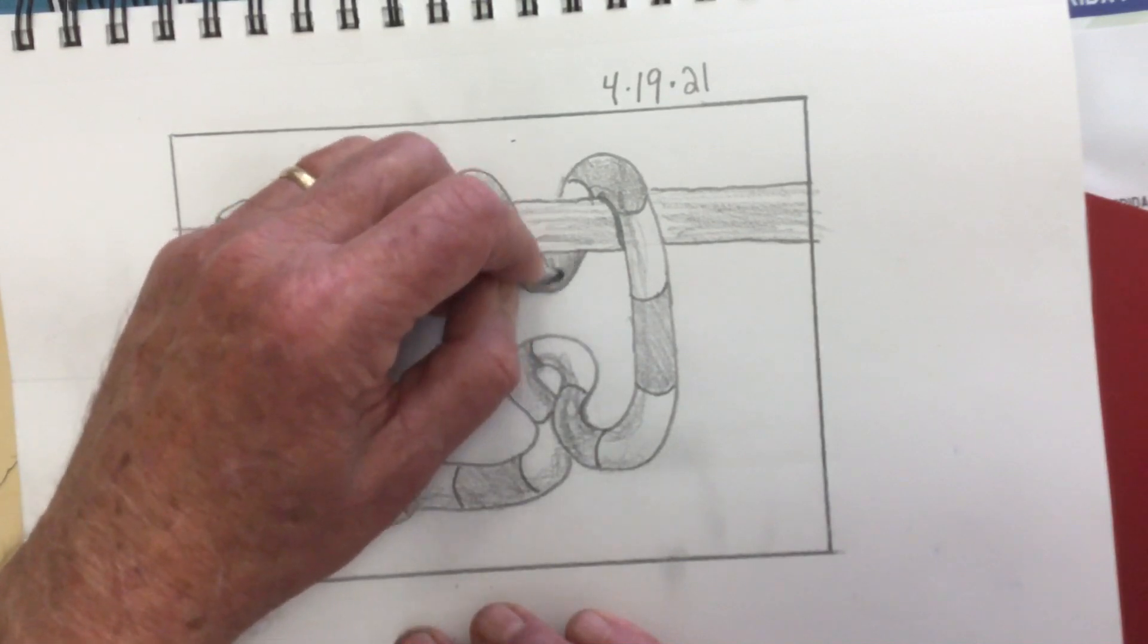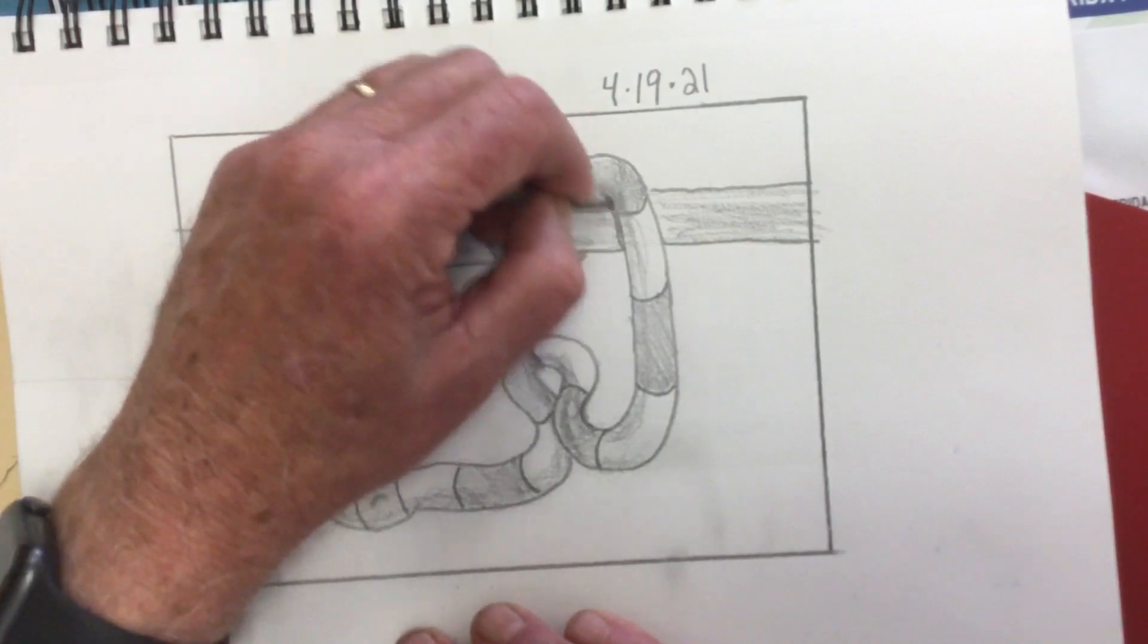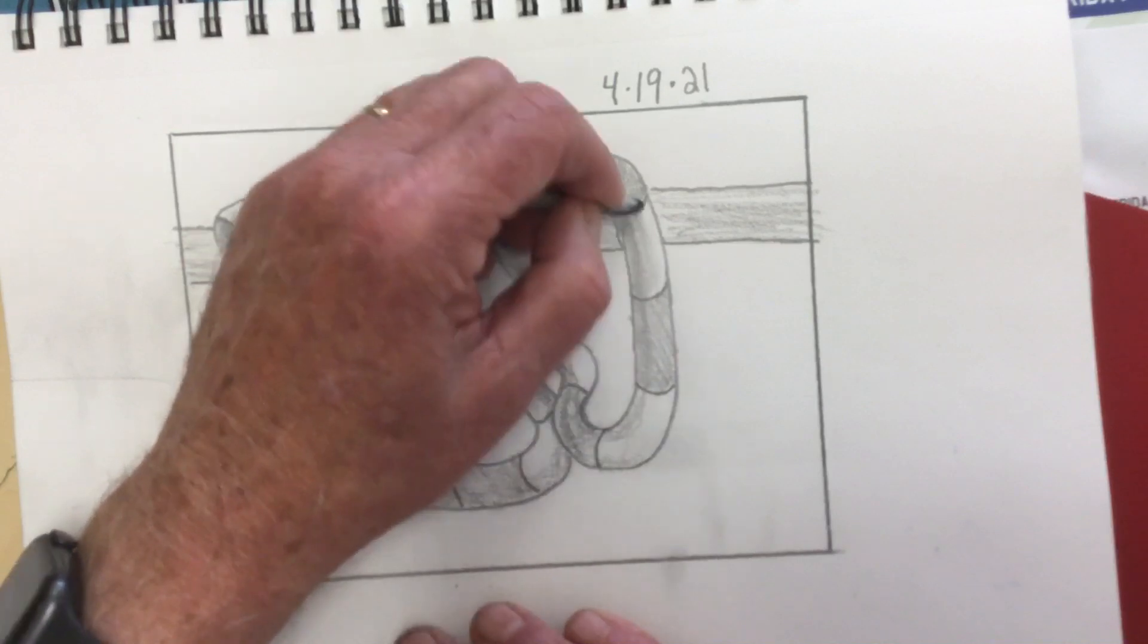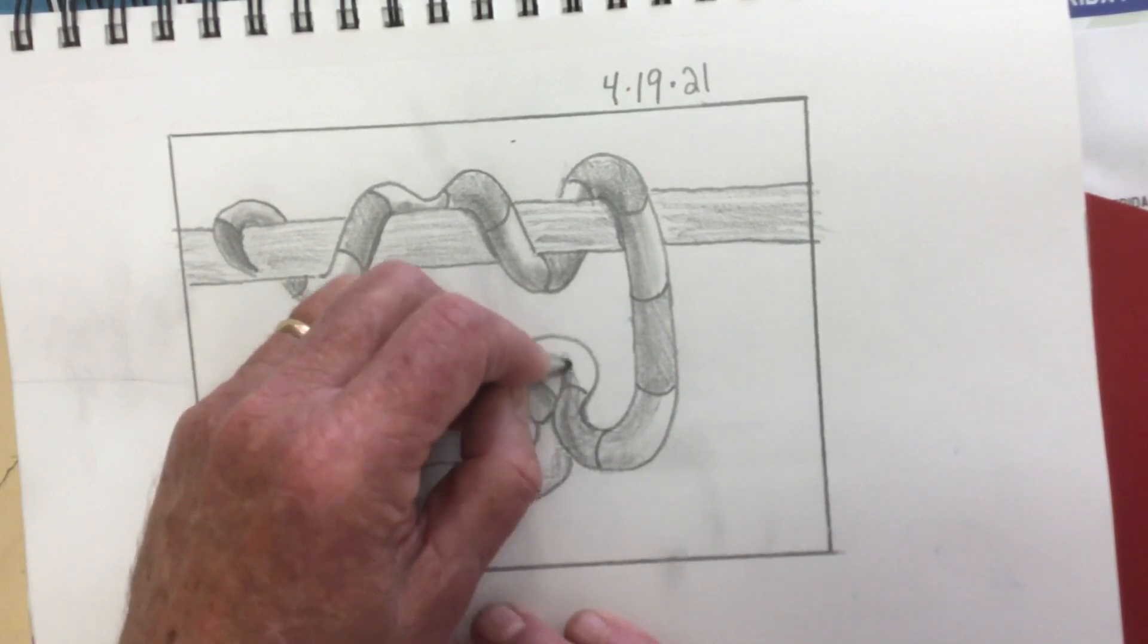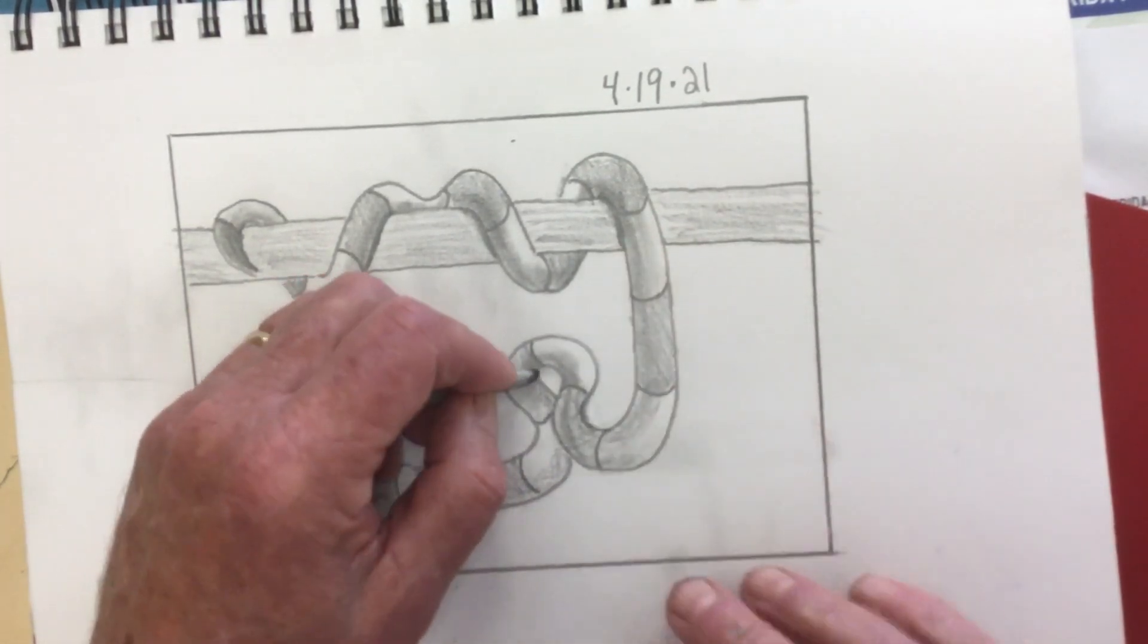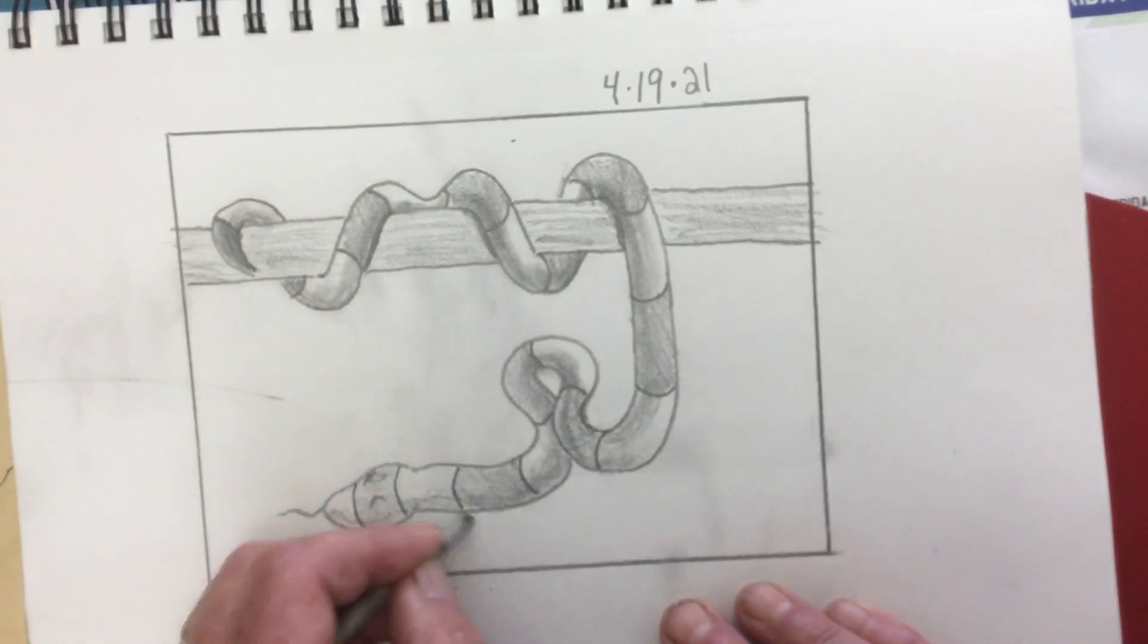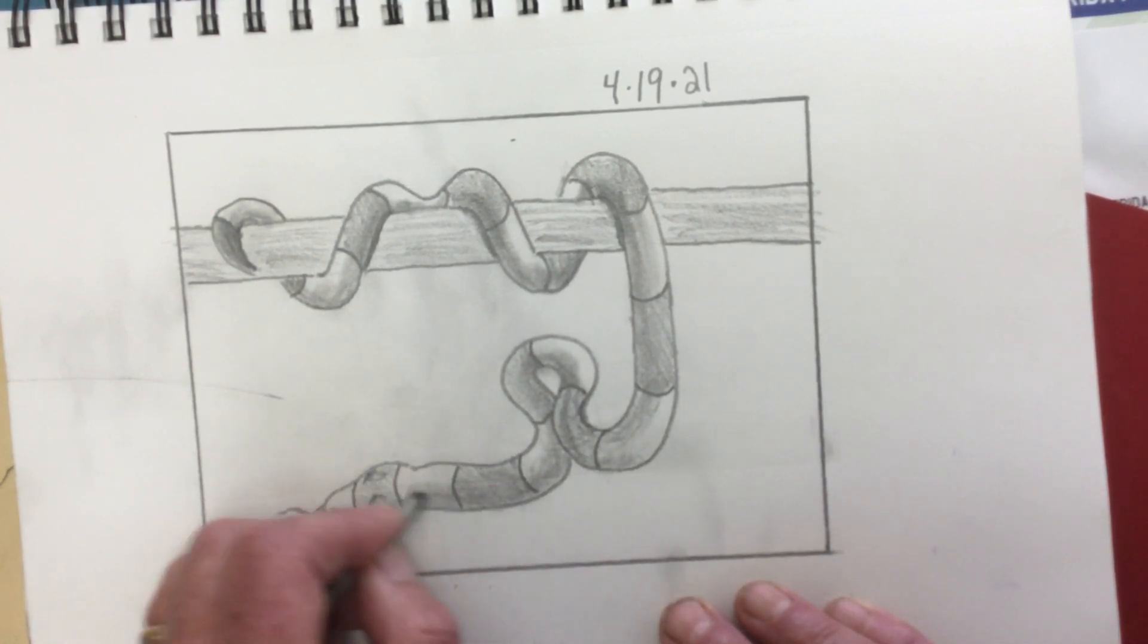Technically you're discouraged from using your finger because there's oils in your hands and you can leave some marks on your drawing that may not show up for a while. So I always recommend try to avoid smudging with your finger. I do it all the time, but I would be remiss if I didn't tell you to avoid smudging with your finger.